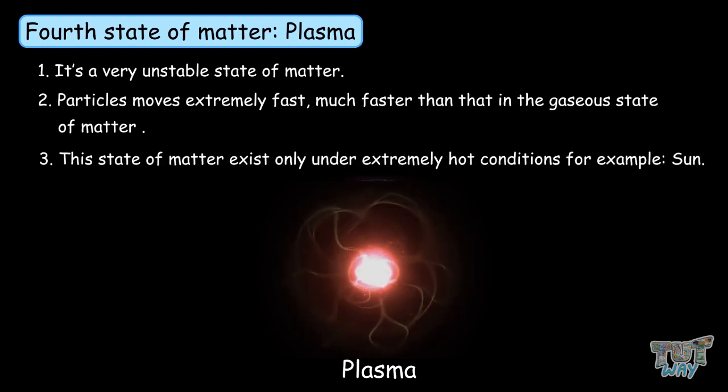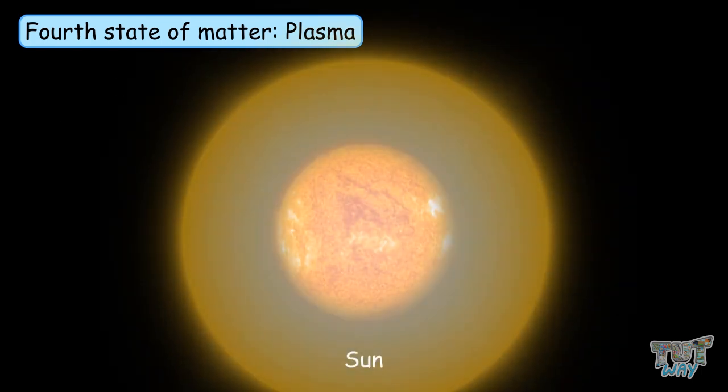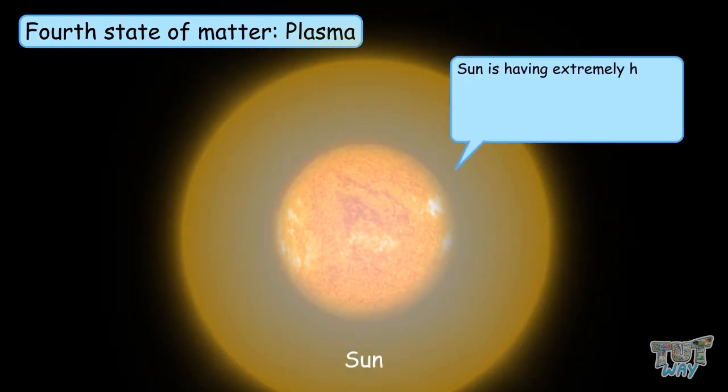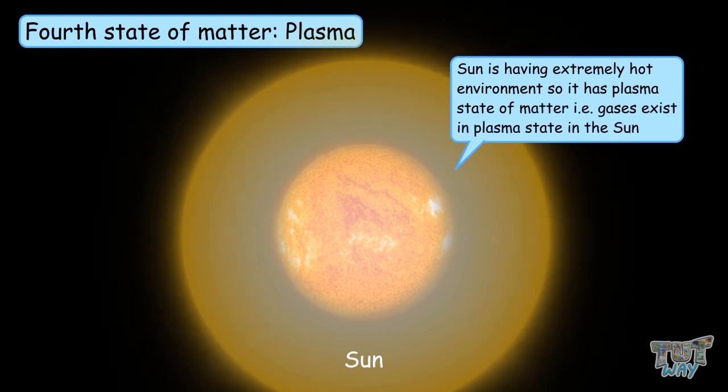This state of matter exists only under extremely hot conditions, for example, the sun. The sun has an extremely hot environment, so it has a plasma state of matter. That is, gases exist in plasma state on the sun.